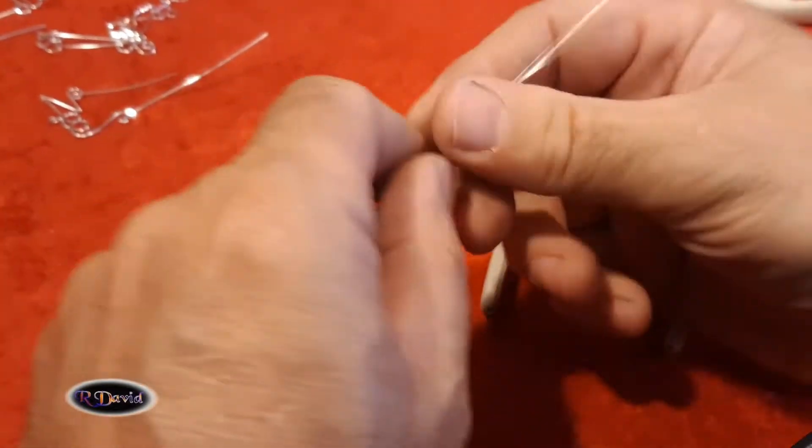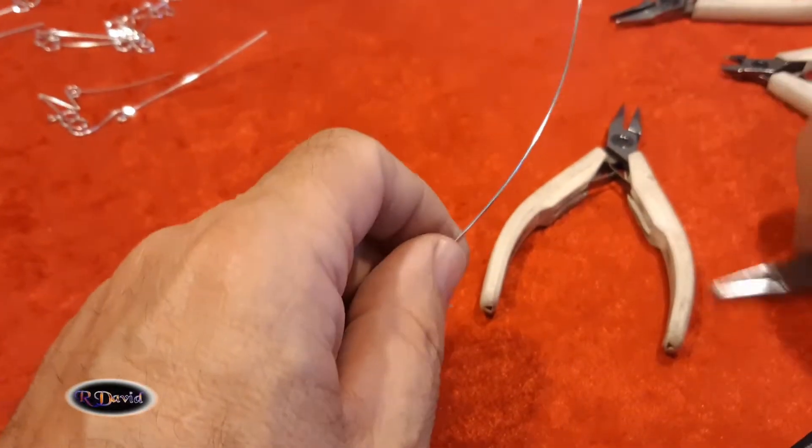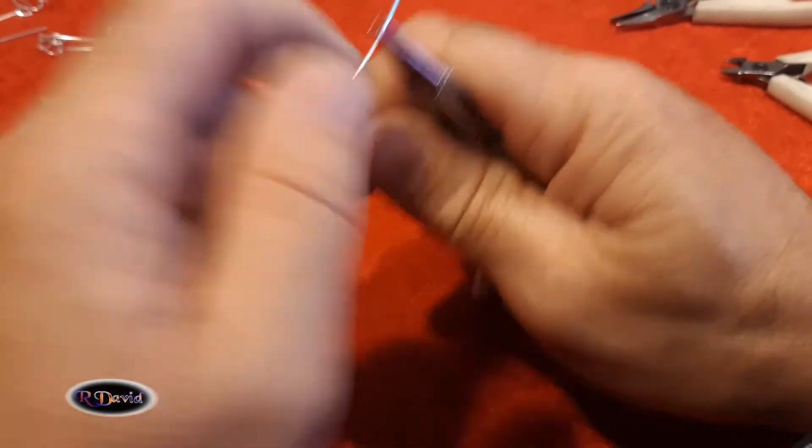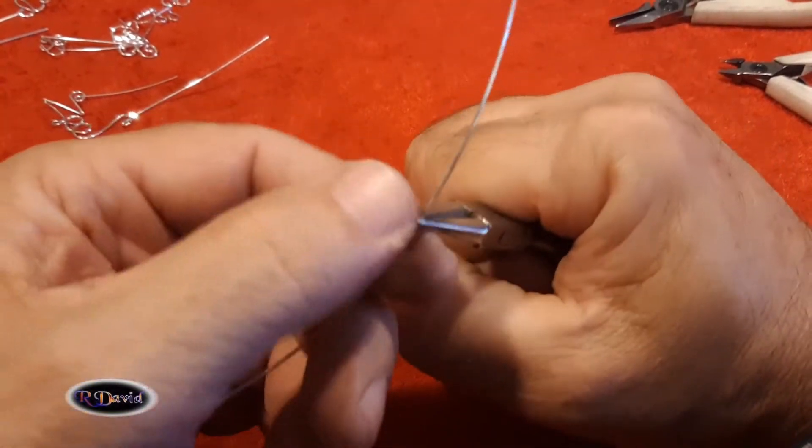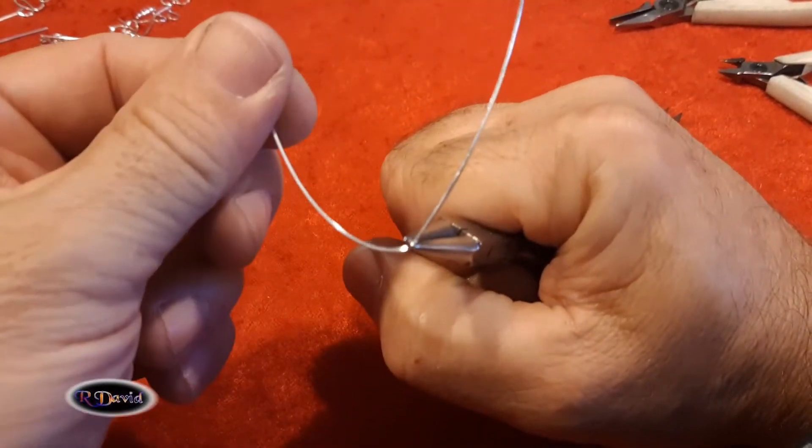Sterling silver, 21 gauge, half hard so it holds its shape nicely. I'm going to start by doing a spiral in, leaving a little lead-off piece here so that we can make the name charm with something for it to hang on.